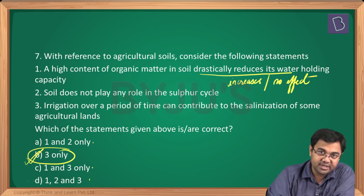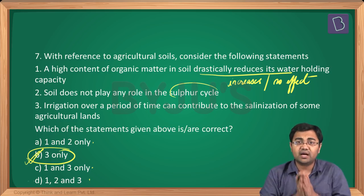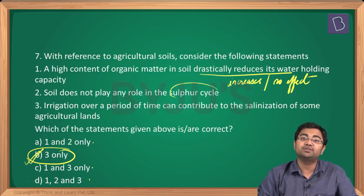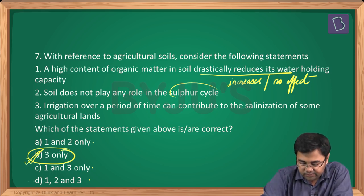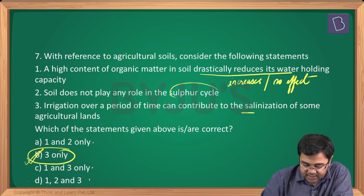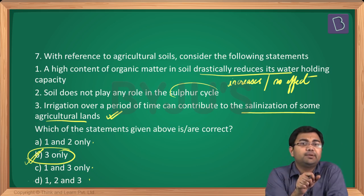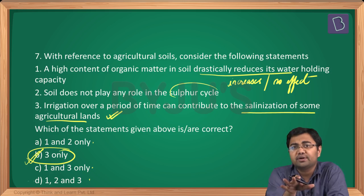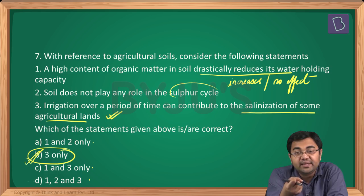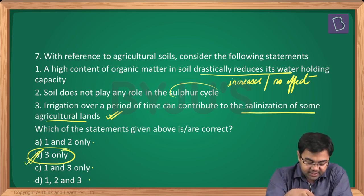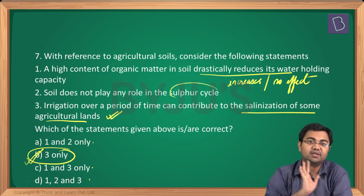Statement 2 says soil does not play any role in the sulphur cycle — completely wrong, because half the sulphur cycle happens inside the soil. Statement 3 says irrigation over a period of time can contribute to salinization of some agricultural lands — this is true, because when plants use water, salt is left behind in the soil and gradually accumulates. So statement 3 is also correct. But knowing statement 1 is wrong is sufficient to answer the question correctly.